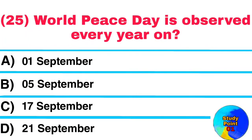Question No. 25. World Peace Day is observed every year on? Answer: 21st of September.